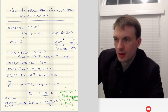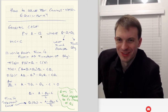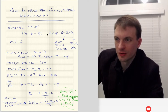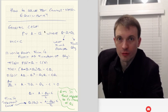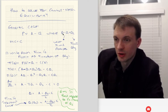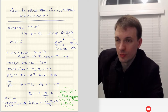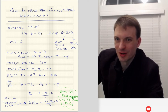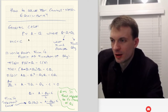We'll start with the inverse demand of P equals A minus Q. A is the vertical intercept, and Q is going to be the market quantity. Q is going to be comprised of the quantity produced by each of our Cournot firms. Thinking of a duopoly, let's define Q equal to the sum of Q1 and Q2, where Q1 is firm 1's quantity and Q2 is firm 2's quantity. We'll assume marginal costs are constant at C.